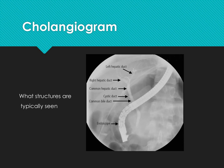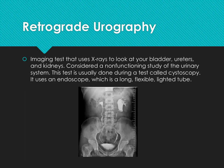Cholangiogram — know which structures are typically seen; see the diagram here. Retrograde urography is an imaging test that uses X-rays to look at your bladder, ureters, and kidneys. It is considered a non-functioning study of the urinary system. This test is usually done during a cystoscopy, using an endoscope, which is a long flexible lighted tube.